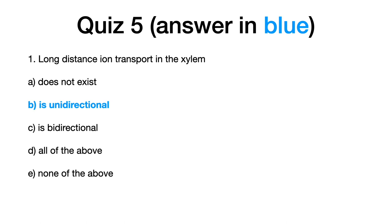Quiz number five, the correct answers are in blue. One, long distance ion transport in the xylem is B, is unidirectional.